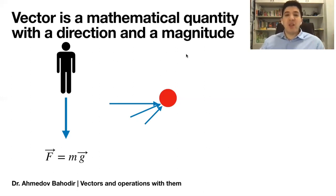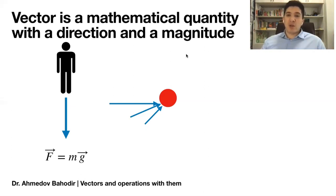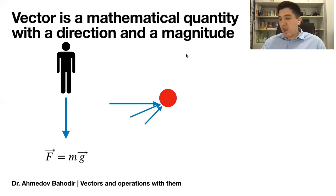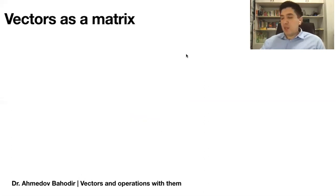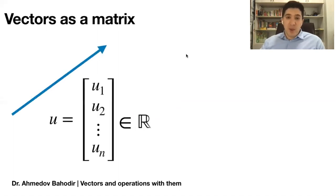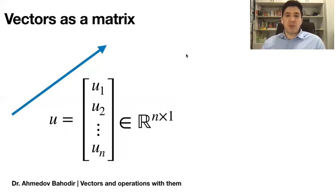Vectors are useful in linear algebra as well. We are going to use vectors in order to construct lines, planes, or spaces which are going to help us figure out solutions for large systems of linear equations and matrix equations. Any vector is going to be denoted using a matrix with one column. If we are given a vector in the n-dimensional case, the vector is going to have n components. So if you are given a vector in 2D, it is going to have two numbers, two components.